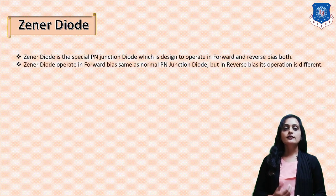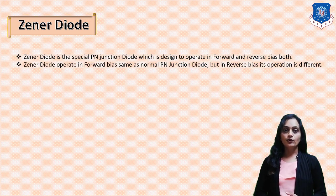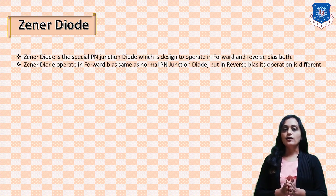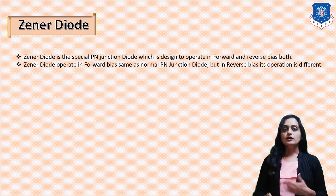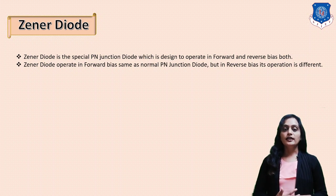What is Zener diode? Zener diode is a special PN junction diode which can be operated in the forward bias as well as the reverse bias region. We had seen the normal PN junction diode in the previous video, which can only be operated in the forward bias region. The Zener diode is a special purpose diode which can be operated in both forward and reverse bias conditions.